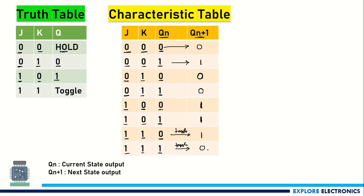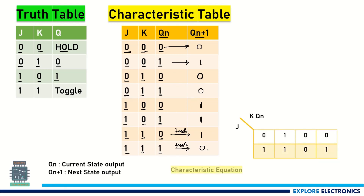Now from this characteristic table, we can get the characteristic equation using the K-map. Here I have taken J vertically with values 0 and 1, and K·Qn horizontally as 00, 01, 11, 10. These are the ones obtained from the characteristic table.